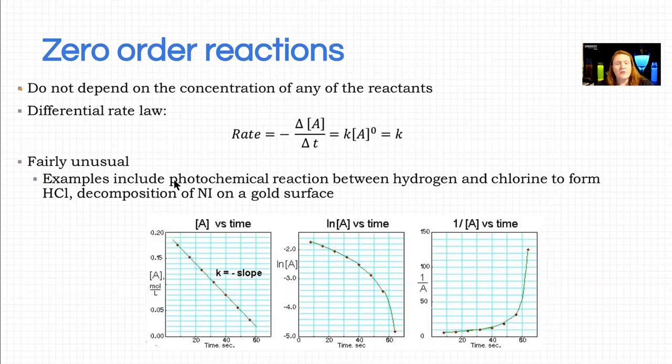So we're going to go through this process for all three of the most common reaction orders. And it's always with respect to A. So we're just looking at one chemical and A stands for any generic chemical. When you're doing a real reaction, like in lab, you need to put a real chemical in there. So in lab, it might be I minus, or it might be persulfate, something like that.